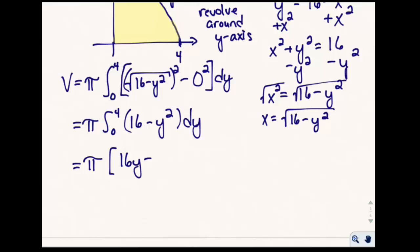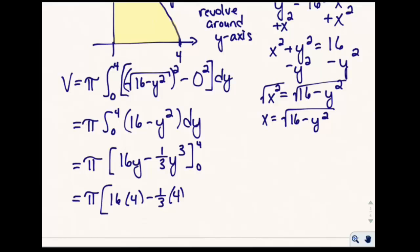When we integrate, we get pi times sixteen y minus one-third y cubed, evaluated from zero to four. That gives pi times sixteen times four minus one-third times four cubed, minus zero. So we get sixty-four minus sixty-four thirds, which gives us 128π/3 as our volume.